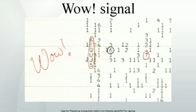The bandwidth of the signal is less than 10 kHz. Each column on the printout corresponds to a 10 kHz wide channel, and the signal is only present in one column. The original printout of the Wow! signal, complete with Jerry Eman's famous exclamation, is preserved by the Ohio Historical Society.